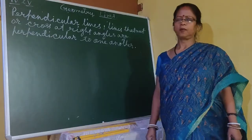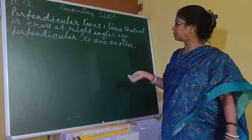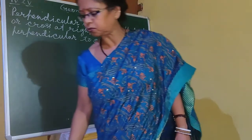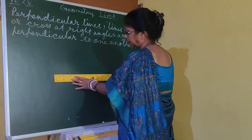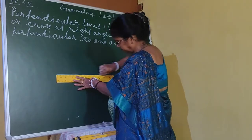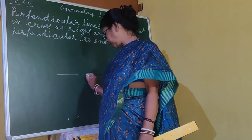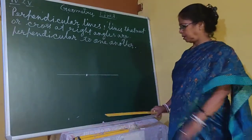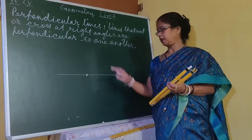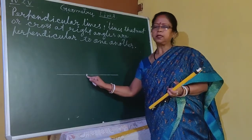Next, perpendicular lines. Perpendicular lines are lines that meet or cross at right angles — they are perpendicular to one another. I will show how to draw right angles with a compass. If two lines perpendicularly intersect, there will be four right angles. If they perpendicularly meet, there will be two right angles.